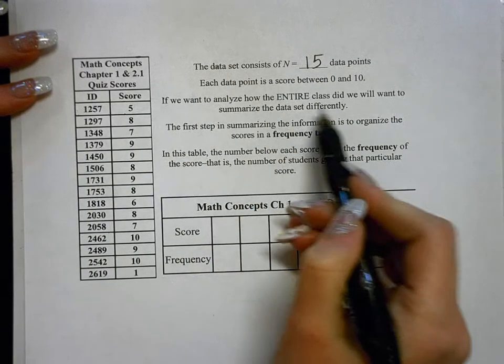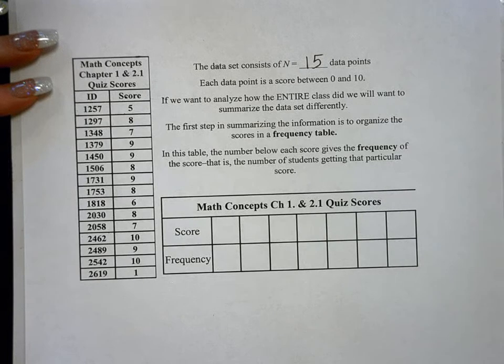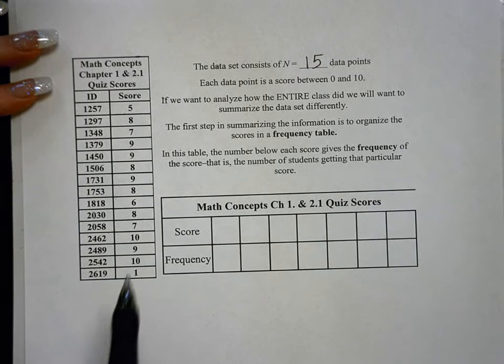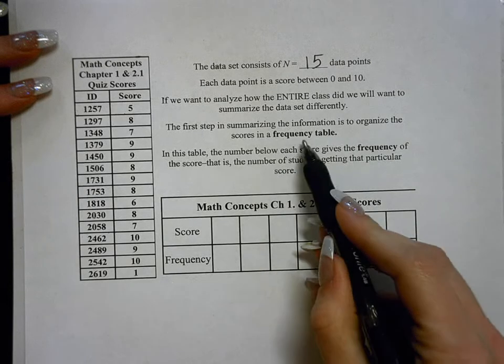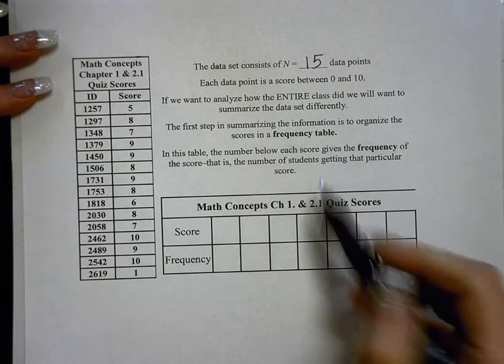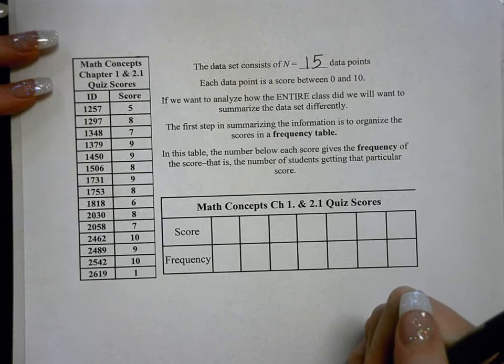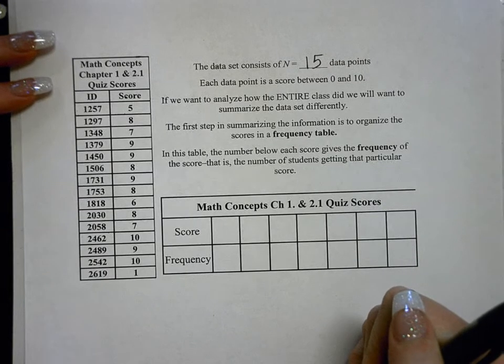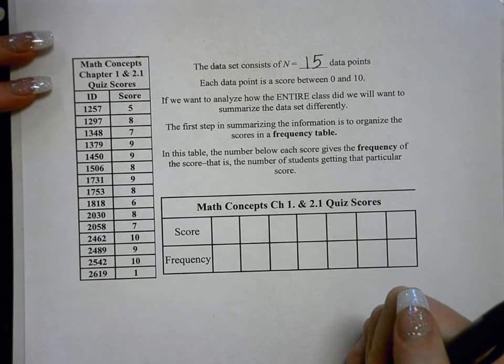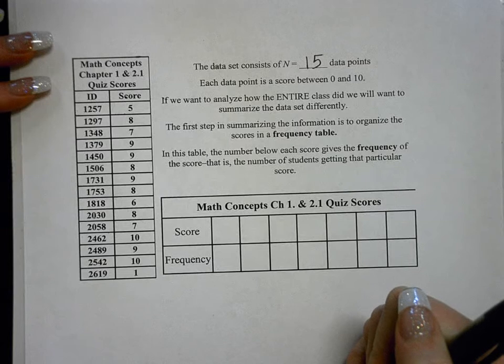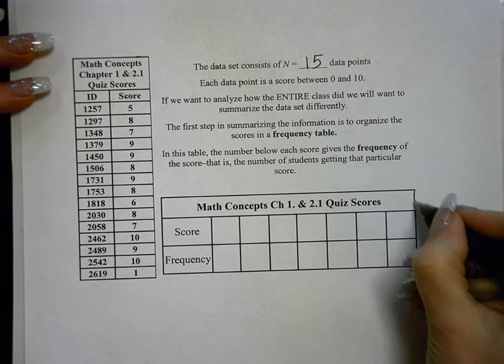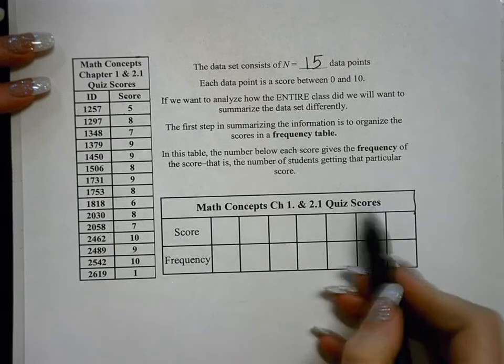If we want to analyze how the entire class did, we will want to summarize this data a little differently. The first step to summarizing the information is to organize the scores in a frequency table. In this table, the number below each score gives the frequency of that score.